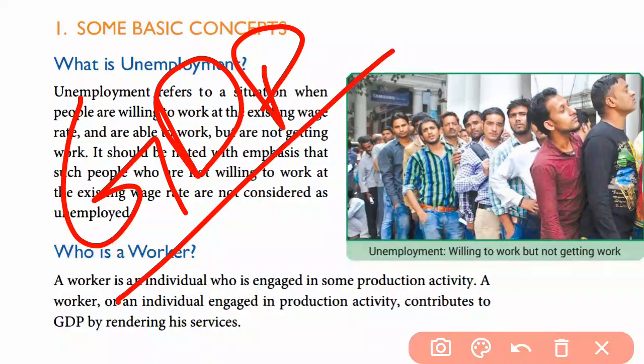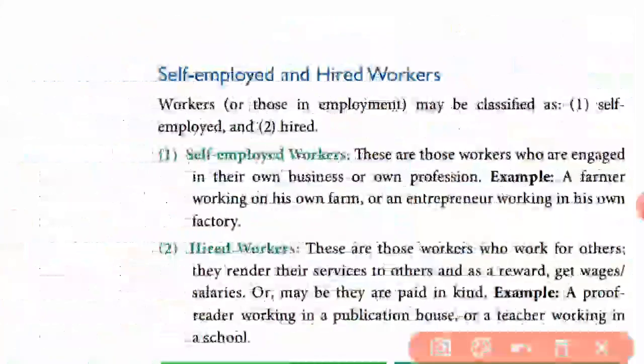GDP means Gross Domestic Product — the total income a country earns from its internal resources. Whatever total income the country generates from its internal/domestic resources is called GDP. Income contributed by an economy during a financial year by domestic sources. Foreign income is not included — only income earned by residents of India contributing to our country's income is part of GDP.